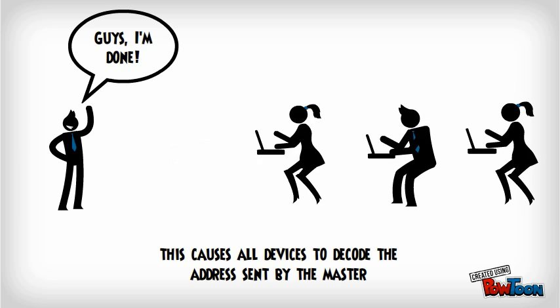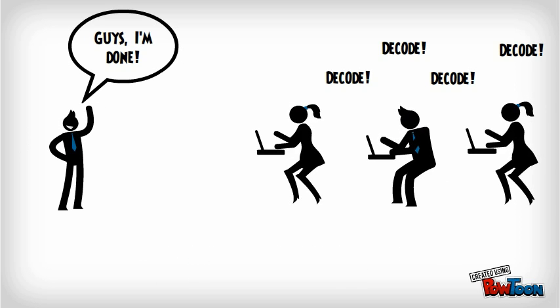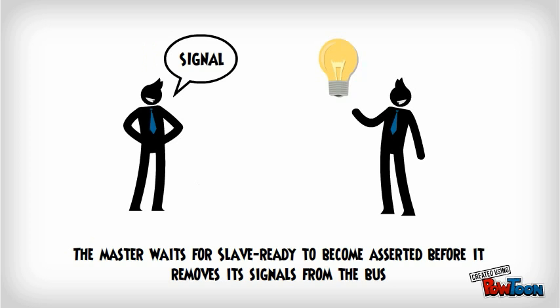The selected slave then performs the required operation and informs the processor that it has done so by activating the slave-ready line. The master waits for the slave-ready to become asserted before it removes its signal from the bus.